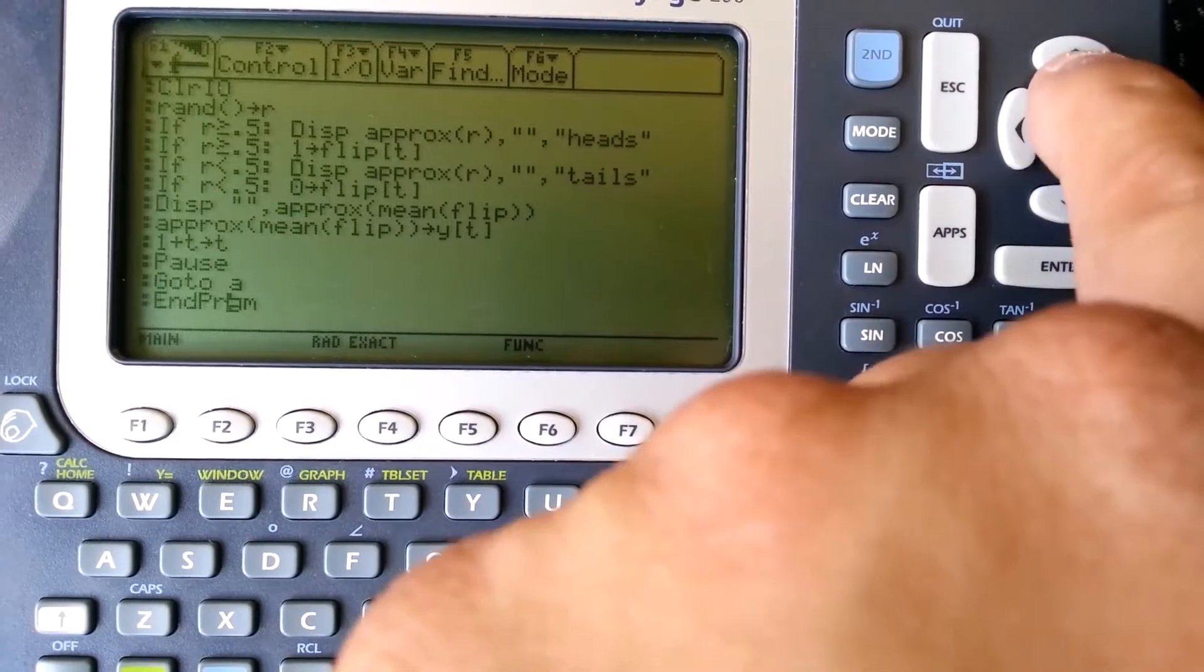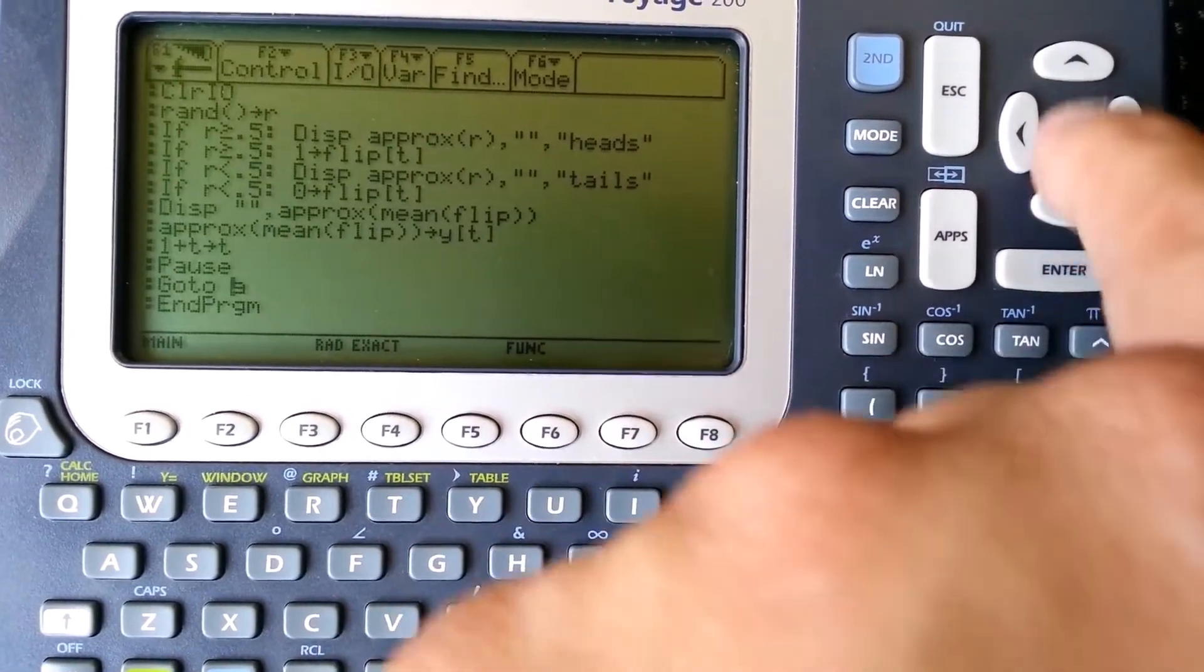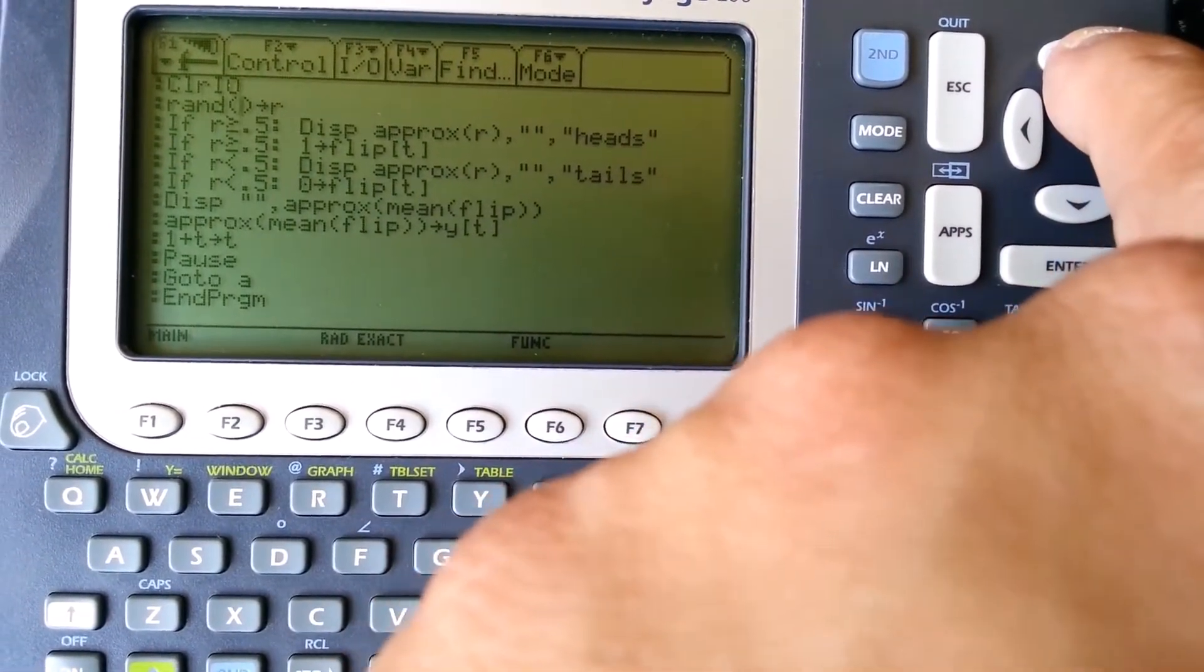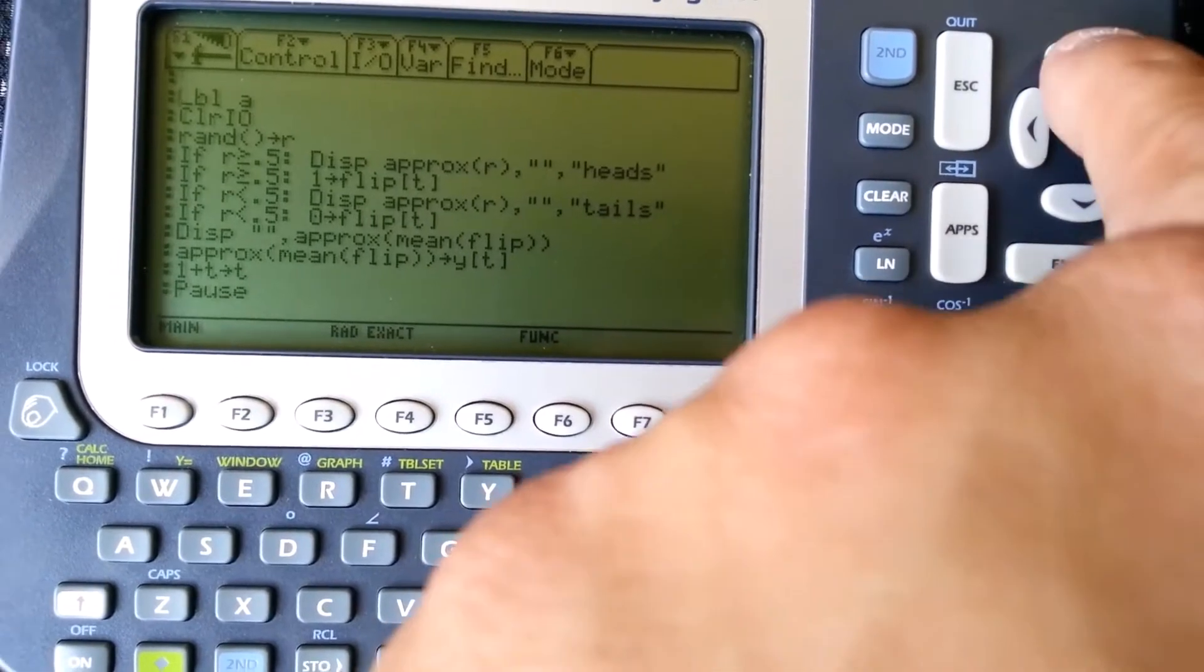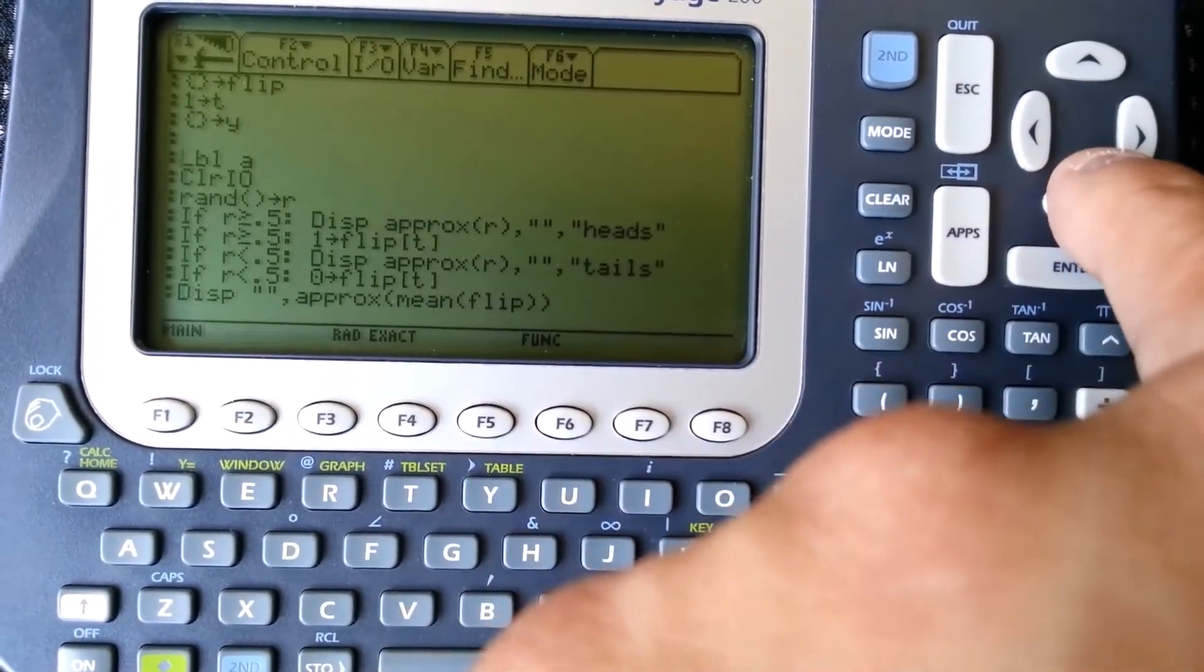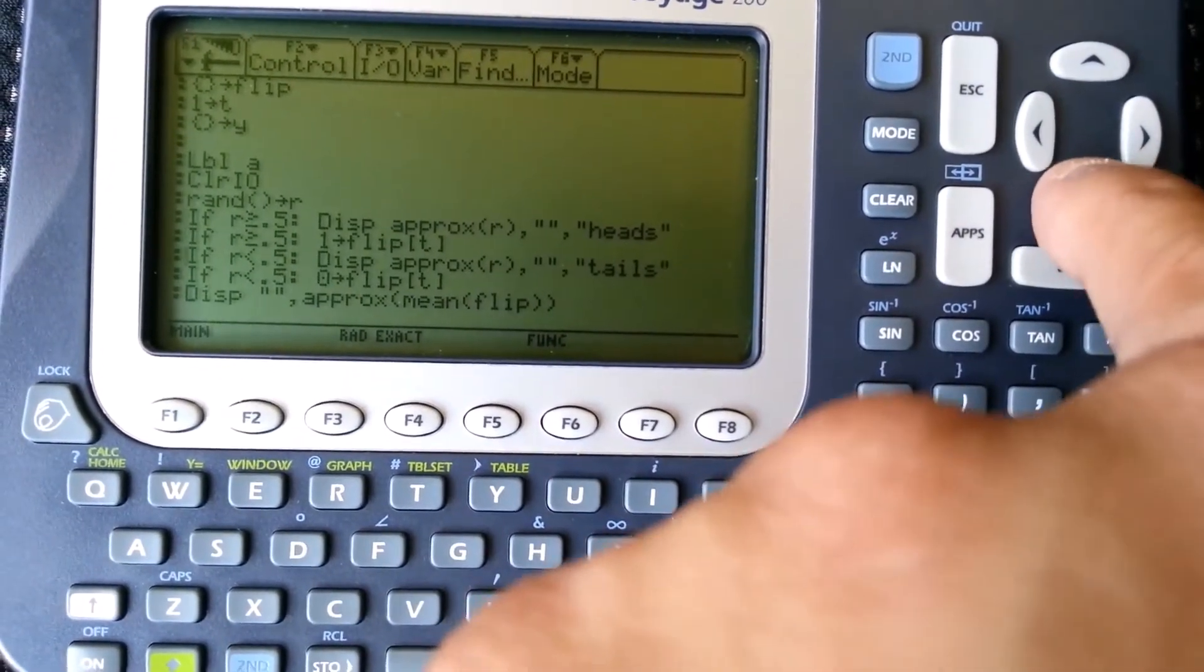Add 1 to the counter, I have a little pause, and then I loop back to a, which is the start of the program, or almost the start of the program. Clear the screen and start over.